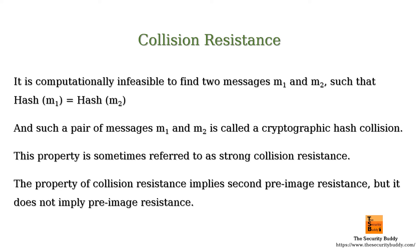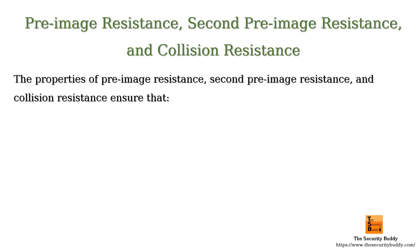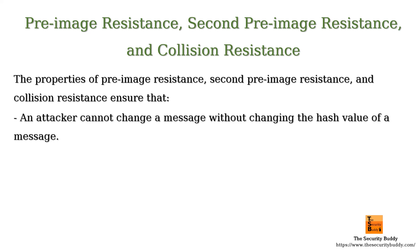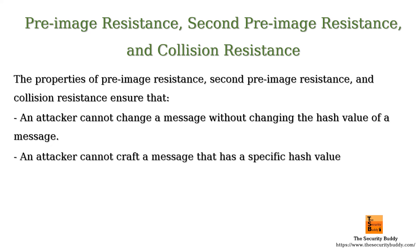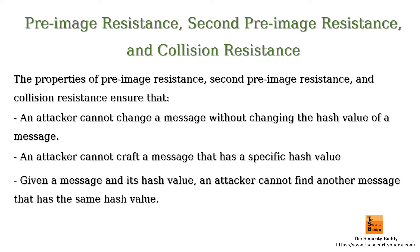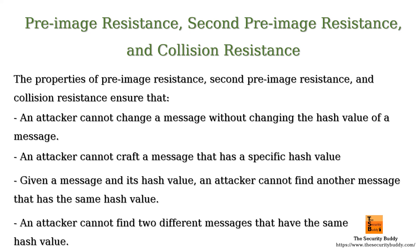The properties of pre-image resistance, second pre-image resistance, and collision resistance ensure that an attacker cannot change a message without changing the hash value. An attacker cannot craft a message that has a specific hash value. Given a message and its hash value, an attacker cannot find another message that has the same hash value, and an attacker cannot find two different messages that have the same hash value. In other words, an attacker cannot replace a message with another message without changing its hash value.